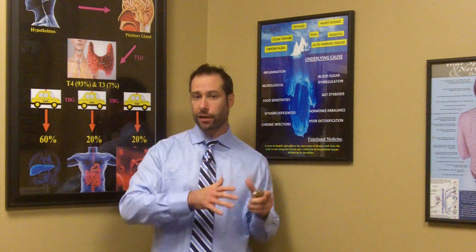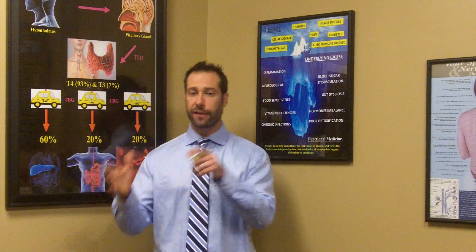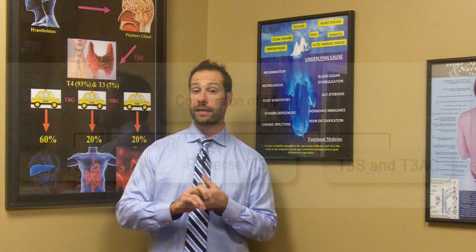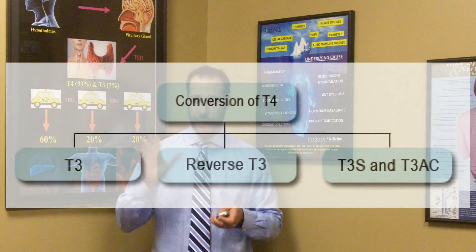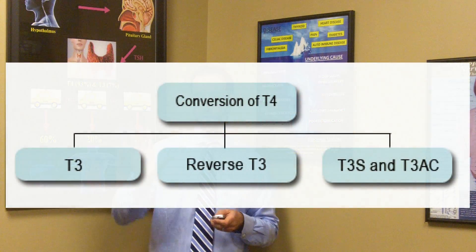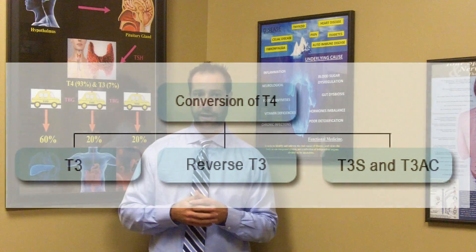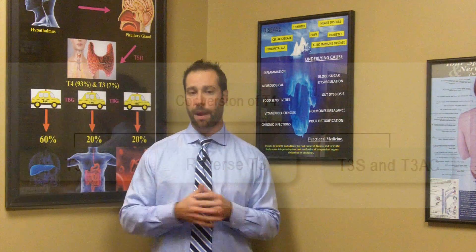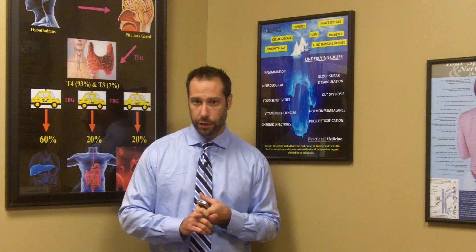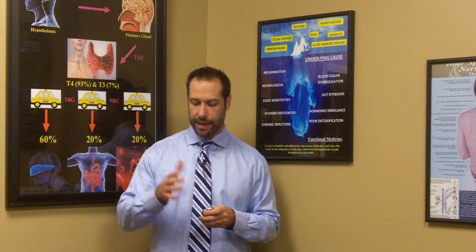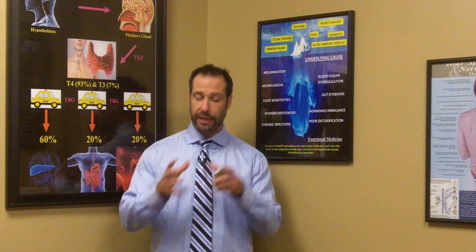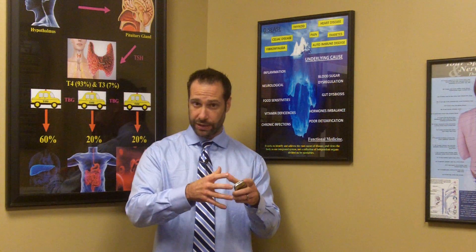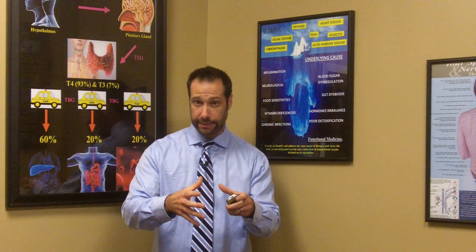In the process of converting T4 into T3, reverse T3 is produced. This isn't actually a bad thing unless those reverse T3 levels go too high — and this is a very common problem I see in my practice every single day. Too much reverse T3 blocks up the receptor sites that are designed and meant for T3. So instead of T3 binding to the site on the cell, reverse T3 binds to the site.